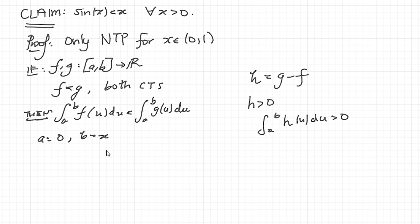So a is 0, b is x. f is going to be the function cosine of u, so f(u) is cos(u), and g(u) is just going to be the constant function 1.